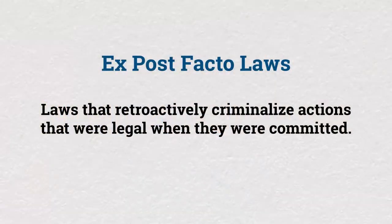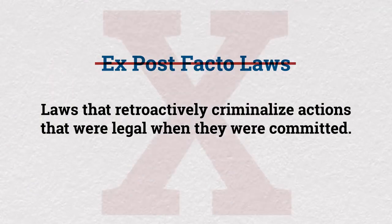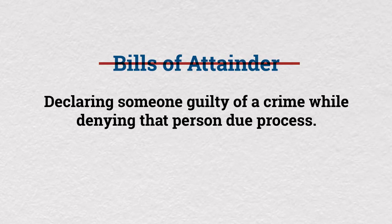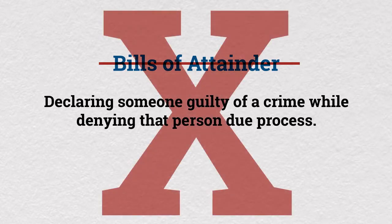The original Constitution — the one that goes out to the states for ratification — is missing something. It's missing what people maybe think about most when they think about the Constitution: individual rights. The original Constitution has some protections for individuals; the government can't enact ex post facto laws or bills of attainder. But those are pretty technical and pretty limited.